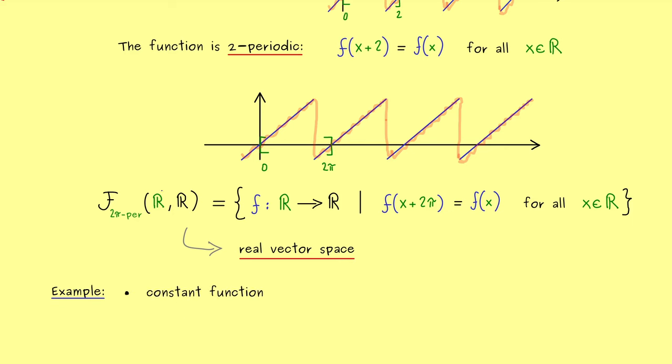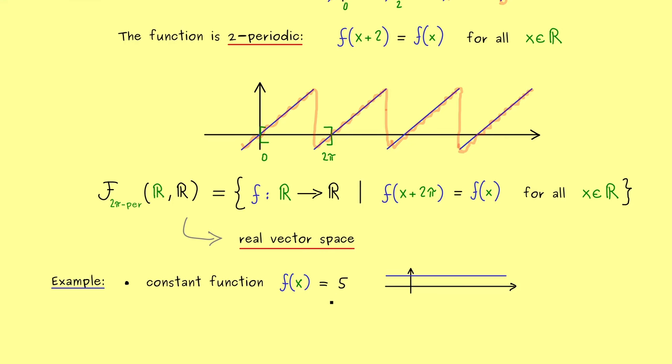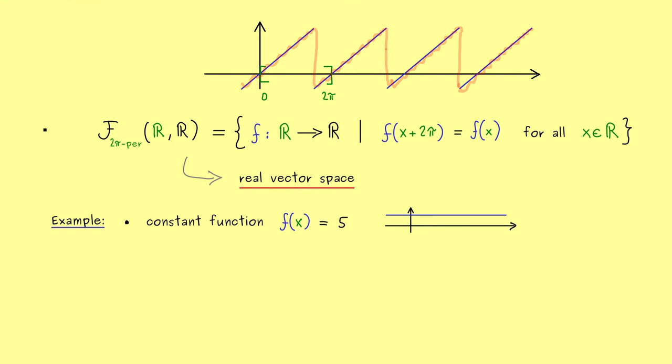For here I would say we immediately look at some examples. Indeed, the simplest 2π-periodic function would be a constant function. So a function that gives the same value no matter which x you put in. If we want, we can say the constant is equal to 5, but obviously this works for every constant. Hence the graph of the function looks like this, and there the periodic property is obviously fulfilled.